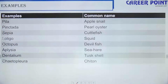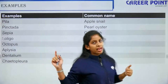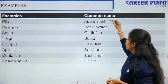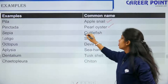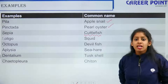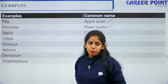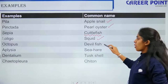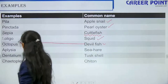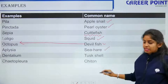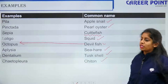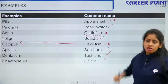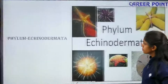Examples of Mollusca include: Pila (apple snail), pearl oyster, cuttlefish, squid, devil fish (octopus), sea hare, tusk shell, and chiton. Remember: cuttlefish belongs to Mollusca, not fish. Octopus is your devil fish. Apple snail and octopus are frequently asked examples.